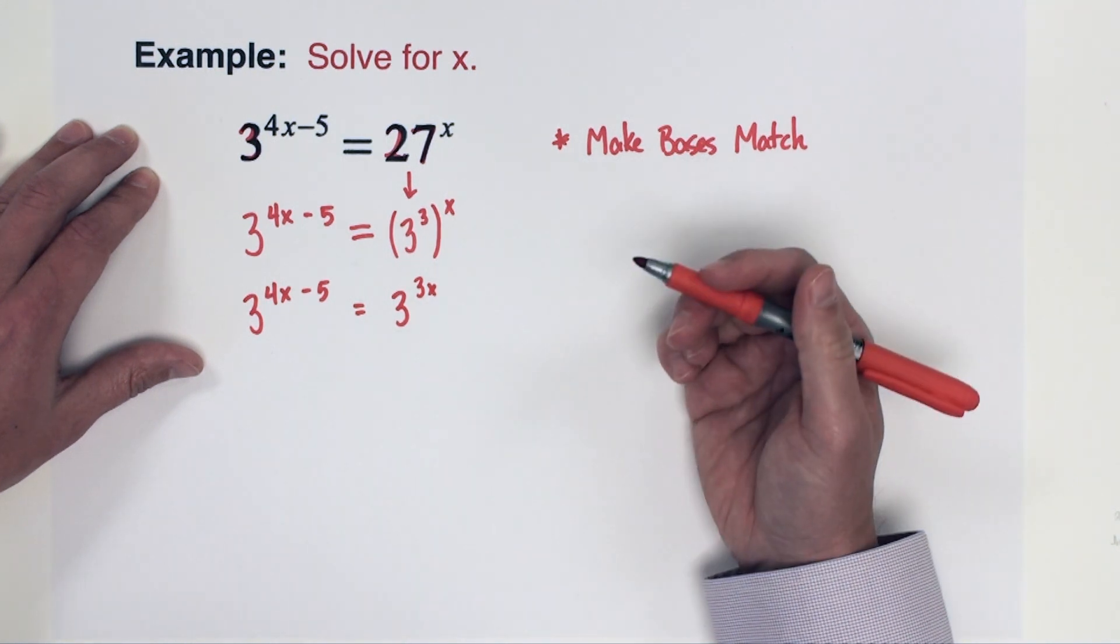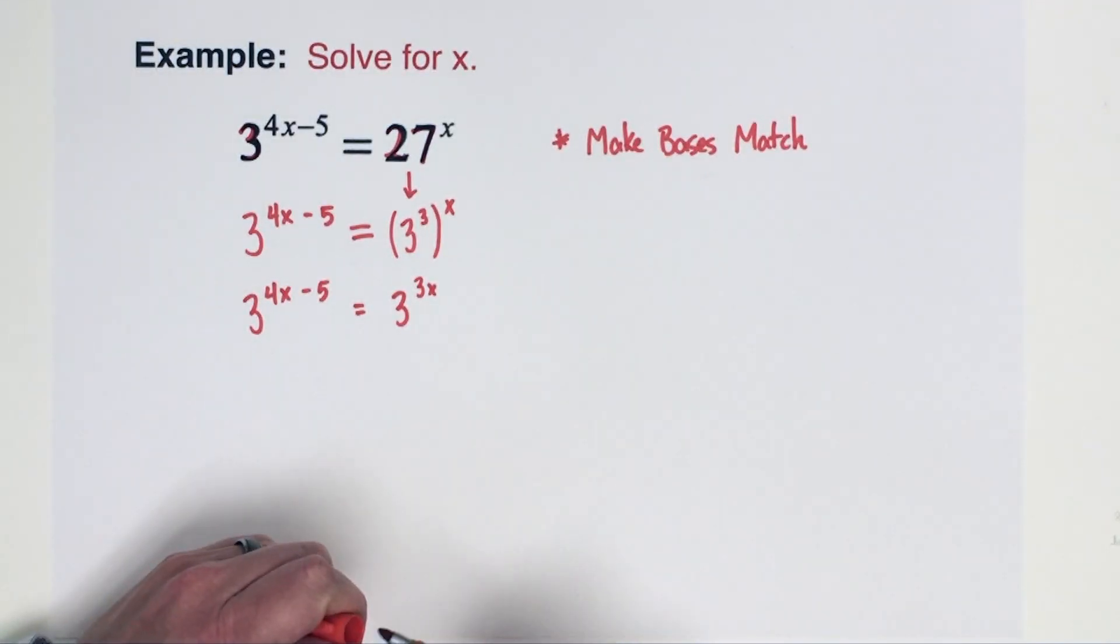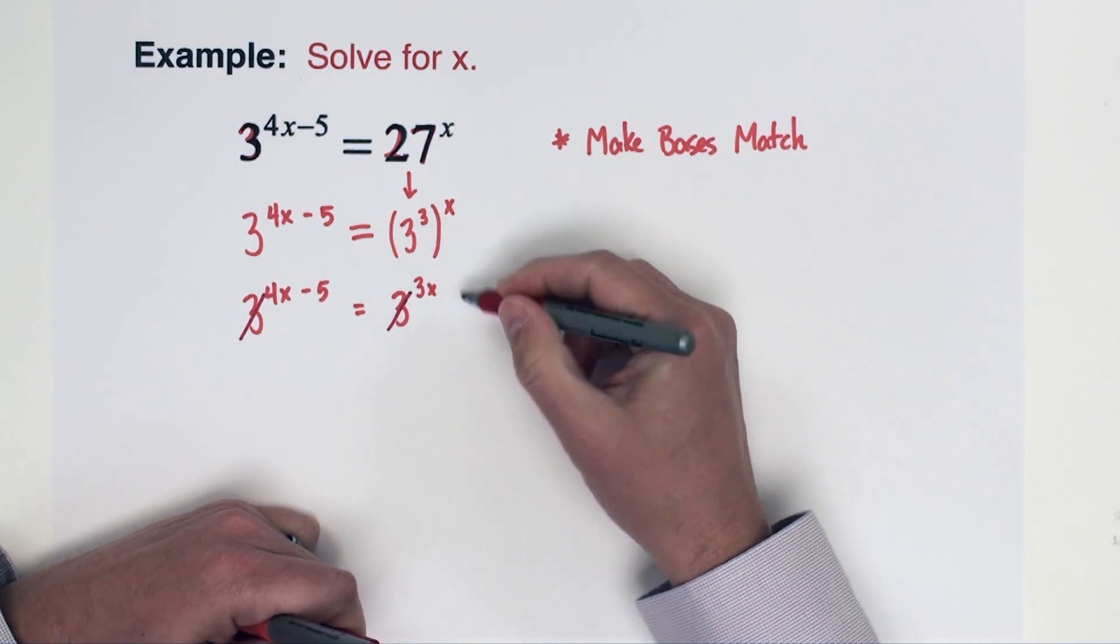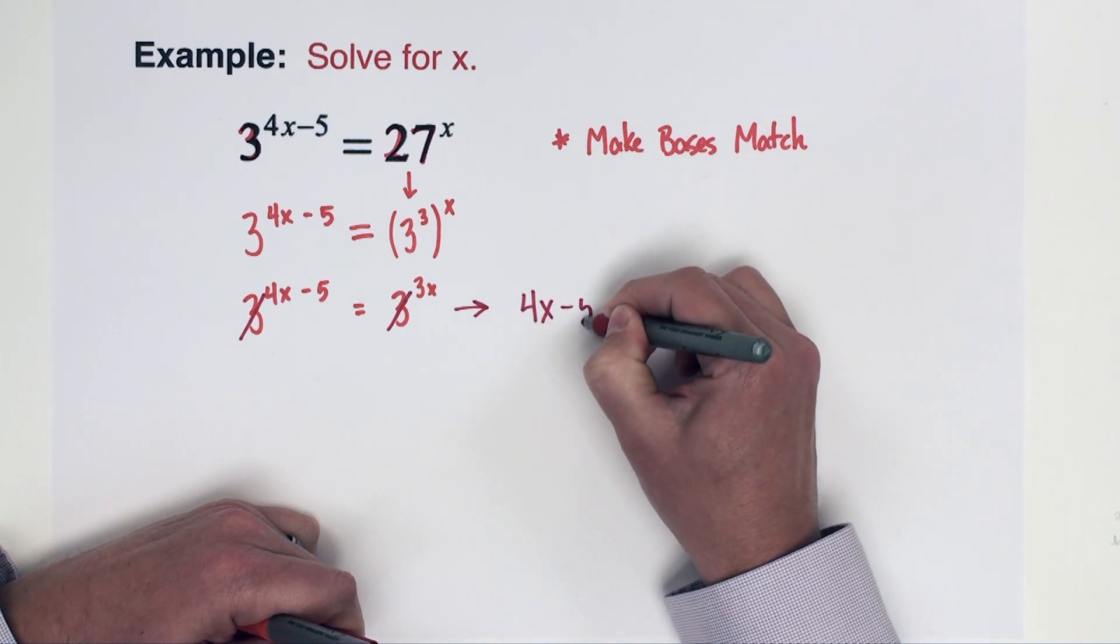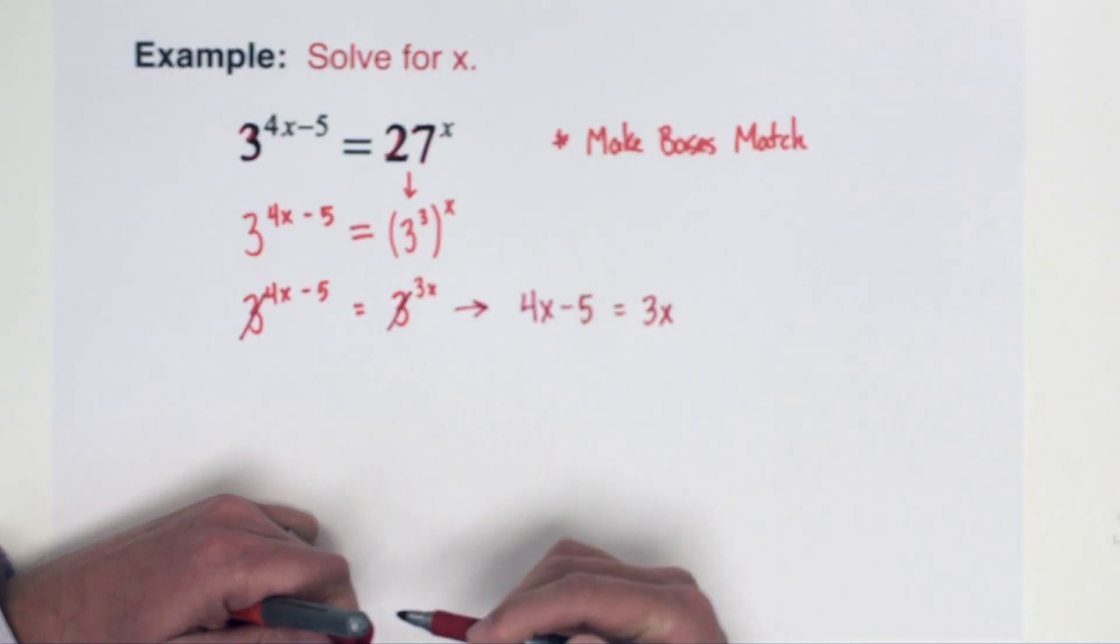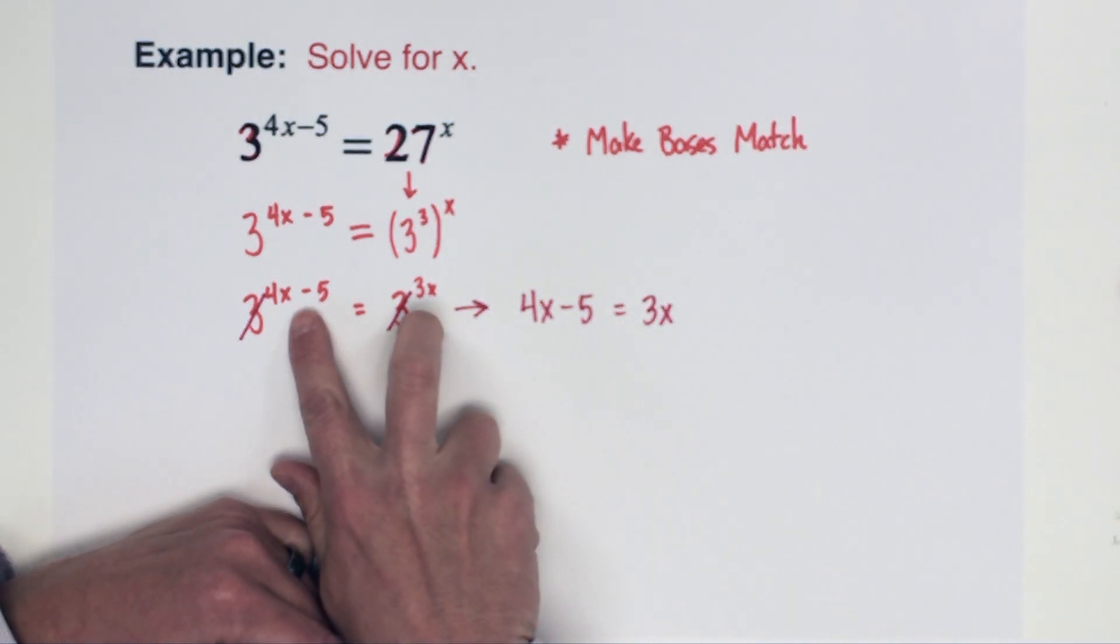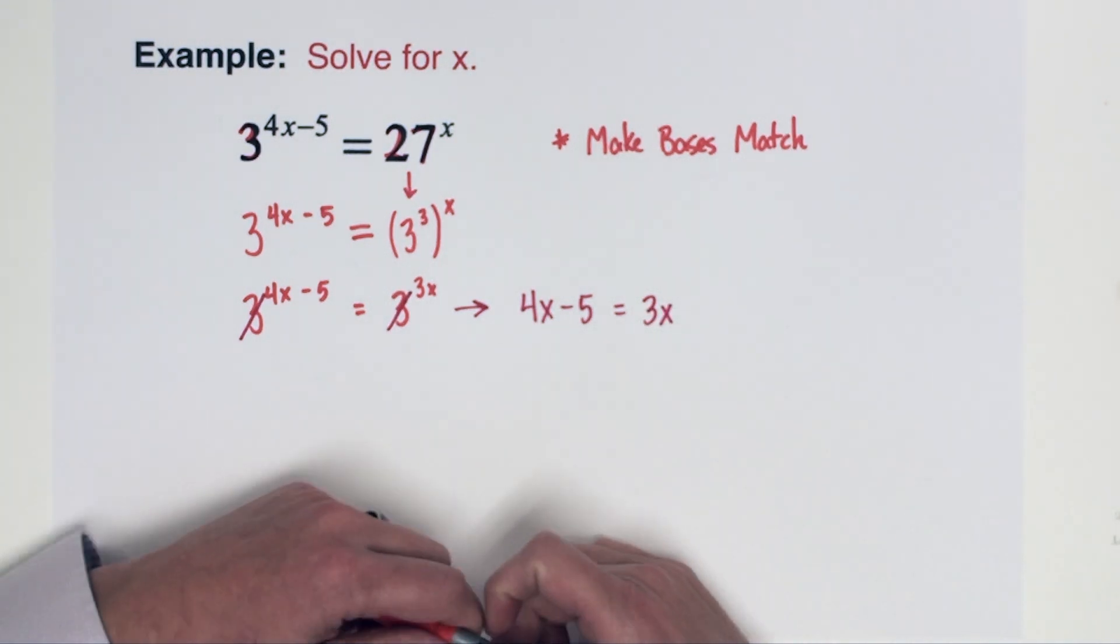At this point, now that the bases are matched, you're able to remove those bases from the equation. We're making the bases match, then we take those out and we just set the remaining exponents equal to each other. And now we just solve this very familiar looking equation.